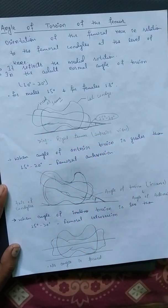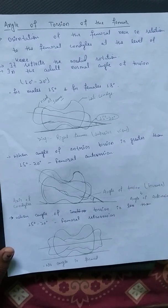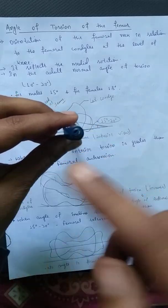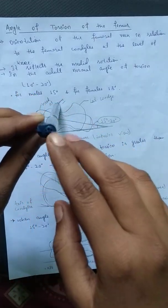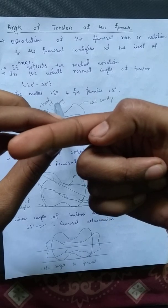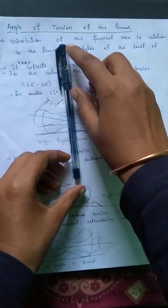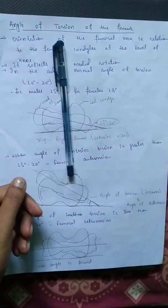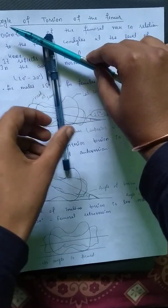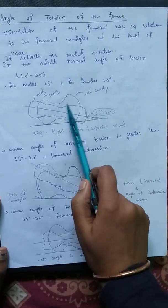The angle of torsion is viewed superiorly. Let's imagine this is the femur, this is the head of the femur, and this is the condyles. We can see the angle of torsion from a superior view. From this upper view, we can see the head of the femur and the condyles axis. The angle between the femoral head axis and the condyle axis — viewed from superior — gives us the angle of torsion.